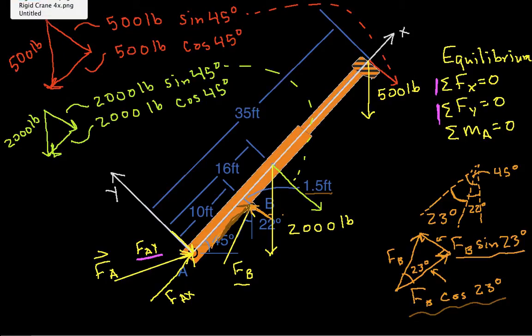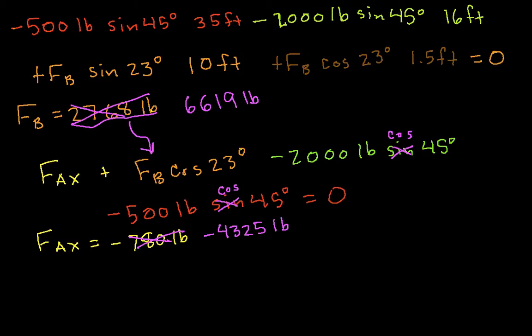The next set of equations will be summing the forces in the y direction. So we have then minus F_AY, and again, this is negative because I've drawn the arrow pointing down, and we're summing forces in the positive y direction.